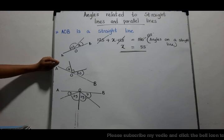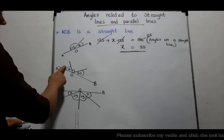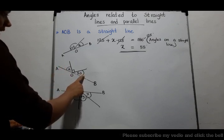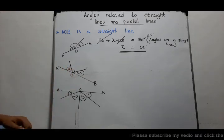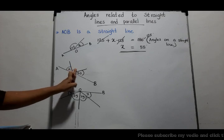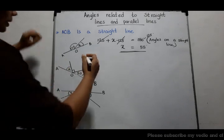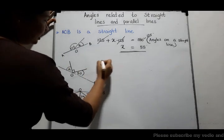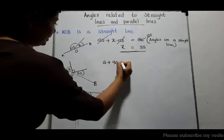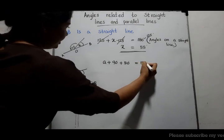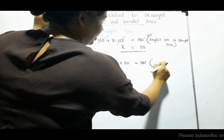Now let's see the next example. Here, AOB is a straight line. This angle is denoted by A, with magnitude 50 degrees. Another angle is a right angle symbol, meaning 90 degrees. We can build up an equation for three angles on a straight line: A plus 90 degrees plus 50 degrees equals 180 degrees. Reason: angles on a straight line.